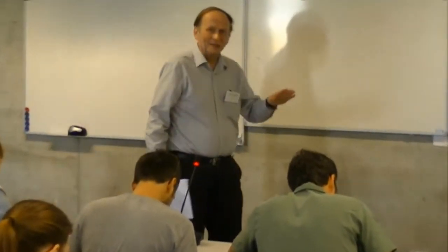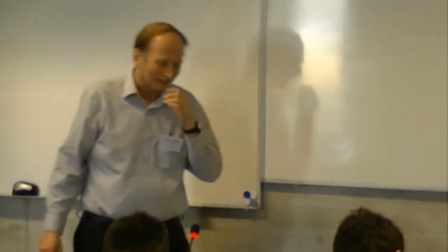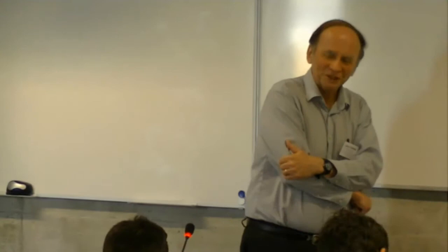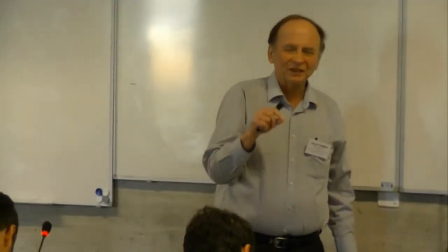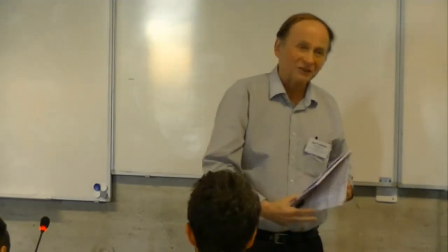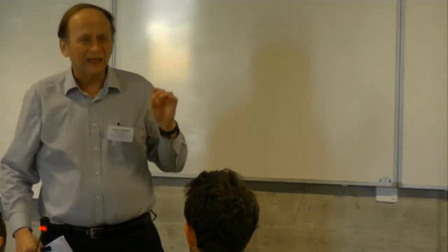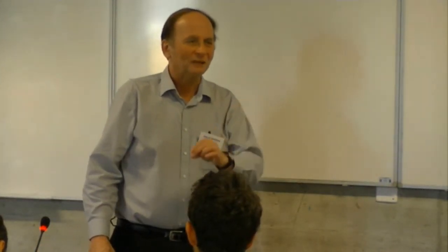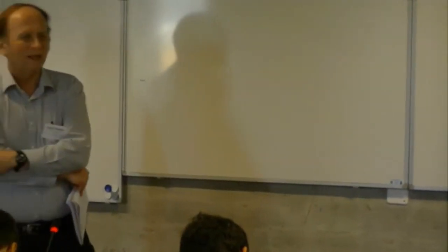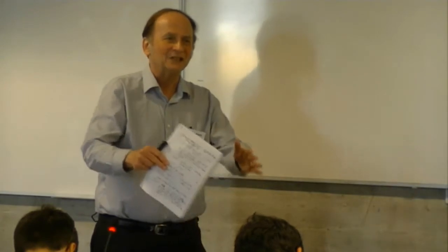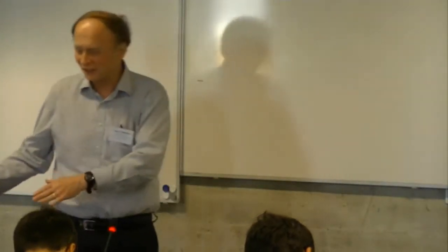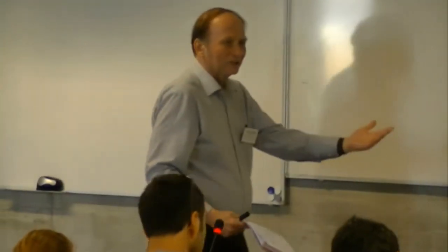I will talk about the generalized gradient approximation today, but first I want to get through a few other points I wasn't able to finish in the first lecture. In Kieran's lecture he gave a very nice explanation for why the local density approximation and related approximations are more accurate for exchange and correlation together than for either one separately. That's the reason why you never see anyone doing a practical calculation with exact exchange plus LDA correlation or exact exchange plus GGA correlation — that would be unbalanced. You would lose the error cancellation and the results would be worse than if you used the same approximation for both exchange and correlation.